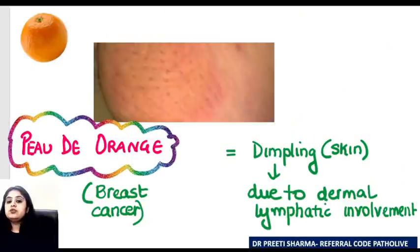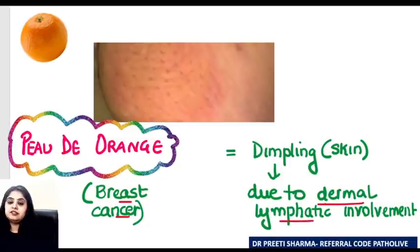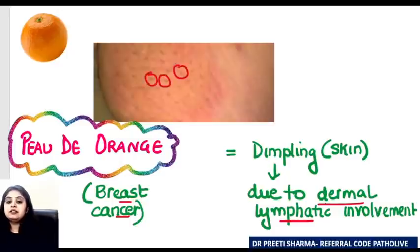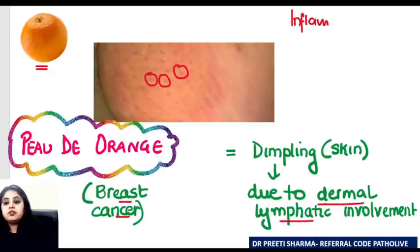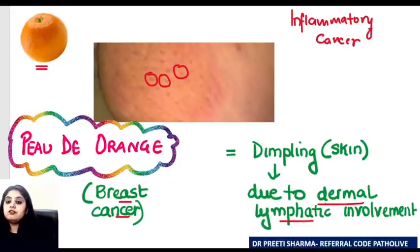Moving to orange — peau d'orange appearance is a famous surgery sign seen in patients of breast cancer, especially when the cancer has involved the lymphatics of the dermis. Dermal lymphatic involvement leads to dimpling in the skin, referred to as peau d'orange appearance. It is particularly associated with inflammatory breast cancer, because inflammatory cancer tends to involve the lymphatics of the dermis.